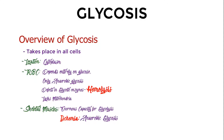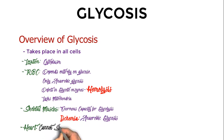Some tissues cannot survive without oxygen — for example, the brain and heart. The heart cannot survive in ischemia, so oxygen is mandatory for the brain and cardiac muscles. Please note down that the heart cannot survive in ischemia.